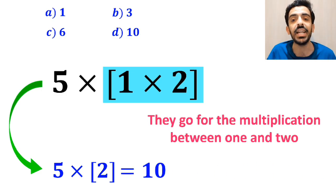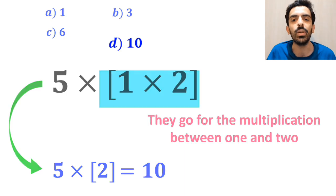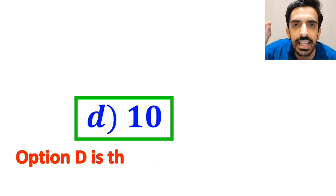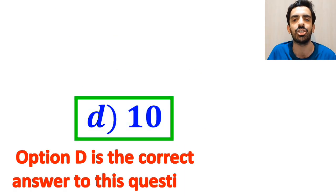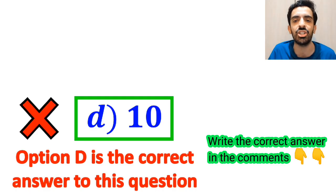Which ultimately gives them the answer 10. And without any hesitation, they quickly say that Option D is the correct answer to this question. However, it's not the correct answer to this question.